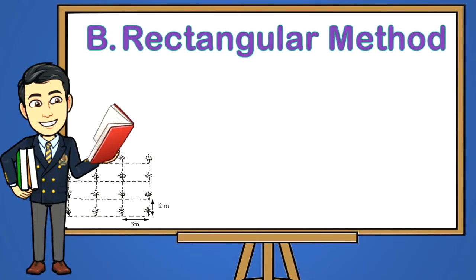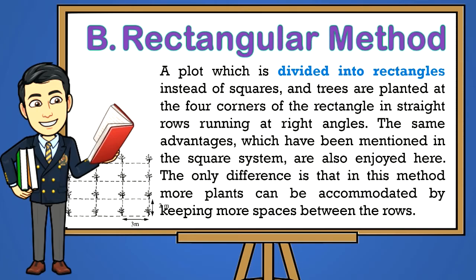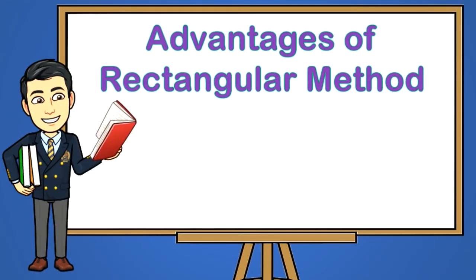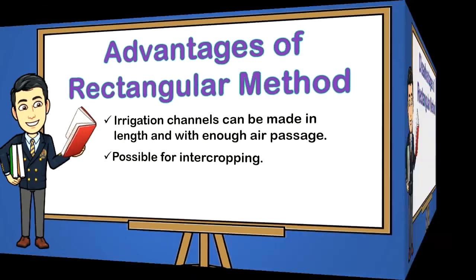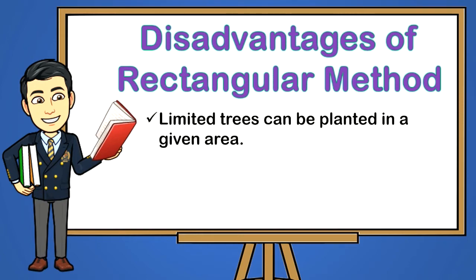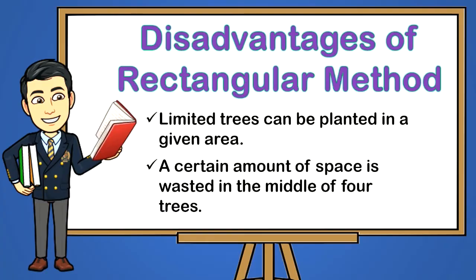B — Rectangular Method. A plot is divided into rectangles instead of squares and trees are planted at the four corners of the rectangle in straight rows running at right angles. The same advantages as the square system are also enjoyed here. The only difference is that in this method more plants can be accommodated by keeping more spaces between the rows. Advantages: one, irrigation channels can be made in length and with enough air passage; two, possible for intercropping. Disadvantages: one, limited trees can be planted in a given area; two, a certain amount of space is wasted in the middle of four trees.